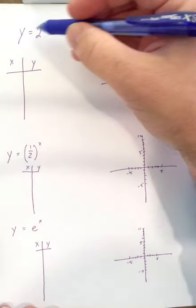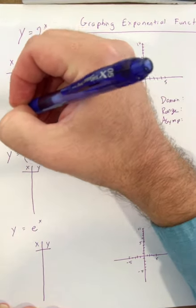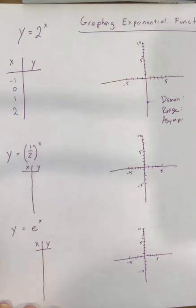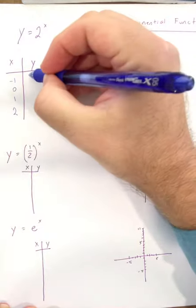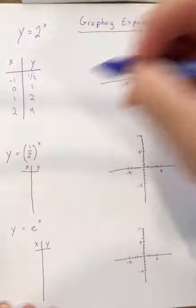Okay, first one, y equals 2 to the x. We're going to start with negative one, zero, one, and two as our x values. We're going to plug in. Two to the negative one is one half. Two to the zero is one. Two to the one is two. And two to the two is four.